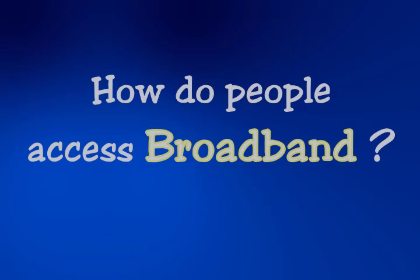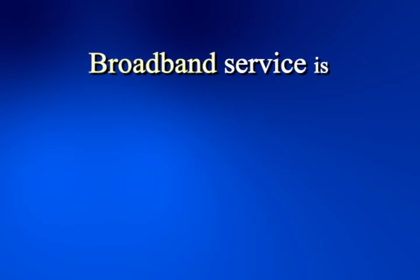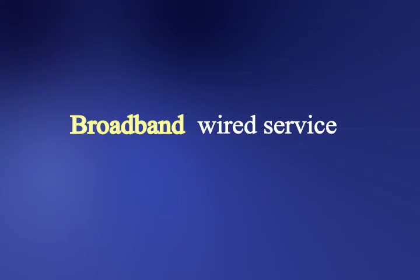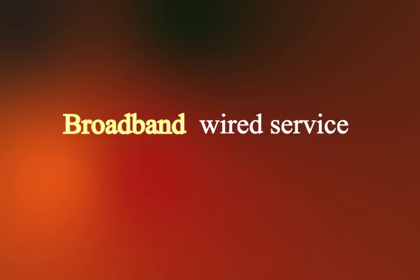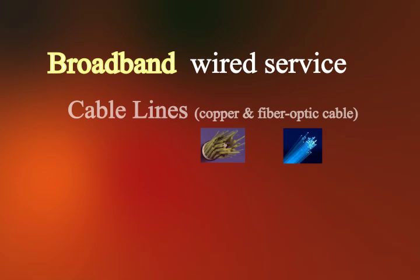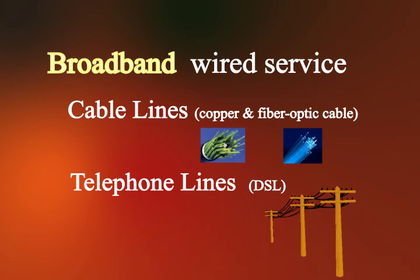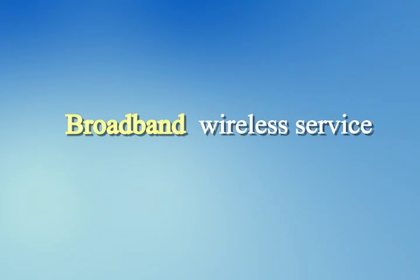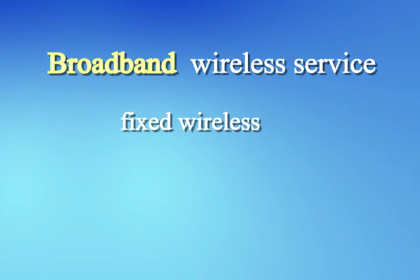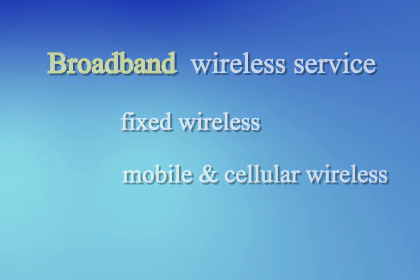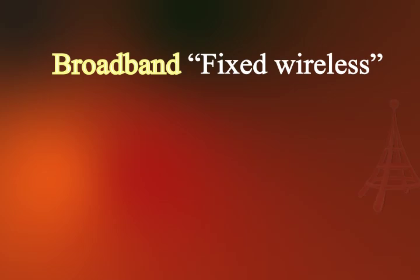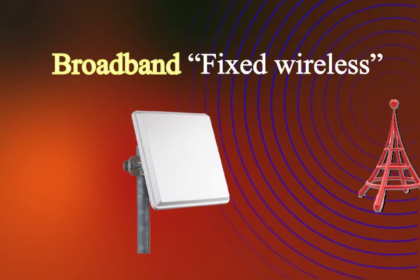How do people access broadband? People get broadband internet access by a number of methods, but typically they have either wired or wireless service. In wired service, you get an internet connection through cable lines or telephone lines. Wireless service, becoming increasingly popular, includes fixed wireless and mobile and cellular wireless. Fixed wireless usually means that you receive your signal over the air, but to a fixed location, such as an antenna mounted on your roof.